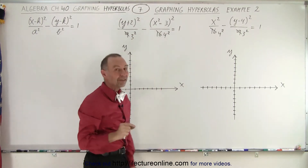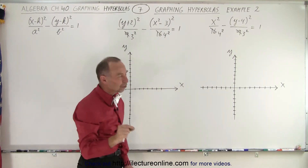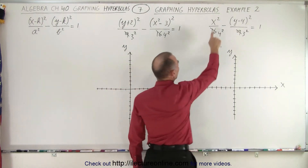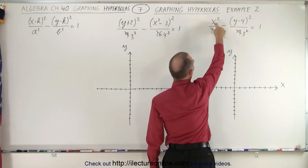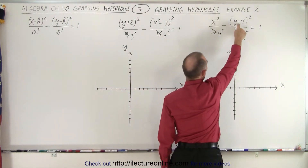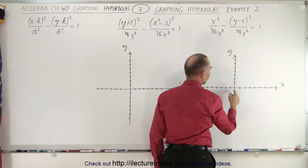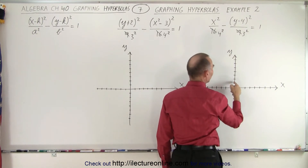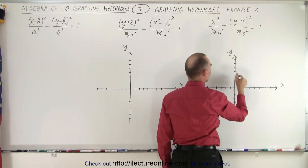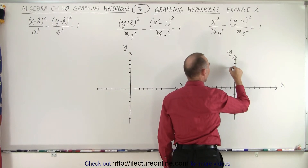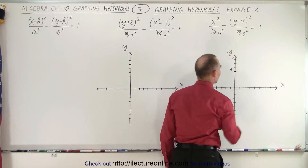Now we need to find the center of the hyperbola. Notice that in the x direction there's no shift, but in the y direction there's a shift — there's a shift upward of 4. So 0 for the x direction, 4 for the y direction. So this is the center of the hyperbola.